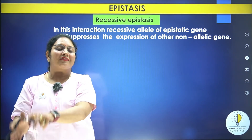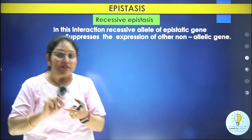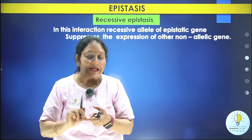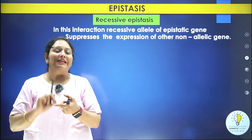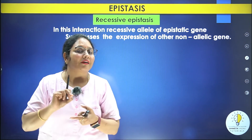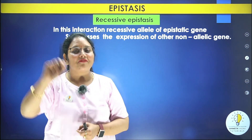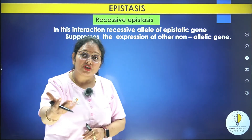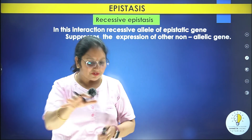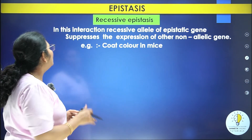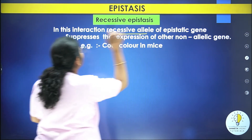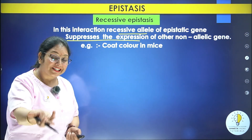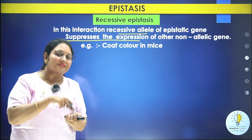In recessive epistasis, the epistatic gene dominates in its recessive form — meaning even while recessive, it can mask or suppress the expression of another gene. So in recessive epistasis, the recessive allele of the epistatic gene suppresses the expression of the non-allelic gene.